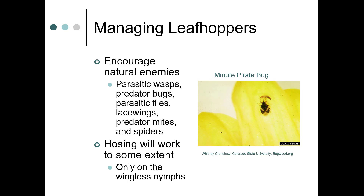One way you can manage leafhoppers is by encouraging natural enemies: parasitic wasps, predator bugs, minute pirate bug — which is actually feeding on thrips here but is definitely a predator of leafhoppers — lacewings, predator mites, and spiders. Still pretty challenging though; they move very quickly. Hosing will work to some extent, but only if you're working with wingless nymphs — they almost laugh at you when you try to hose them off plants.